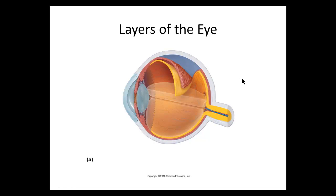Looking at the layers of the eye, we'll start by describing the three major layers. The white part of the eye that you see in the mirror or when looking at someone else is called the sclera. The sclera continues all the way around to the back of the eye — it's a very thick, fibrous outer layer.